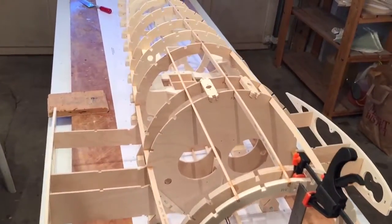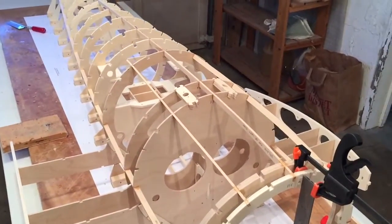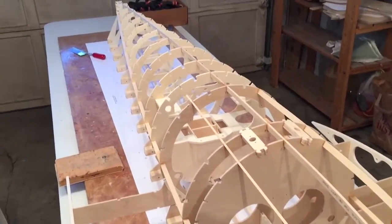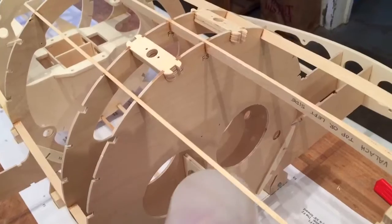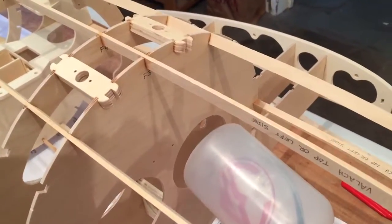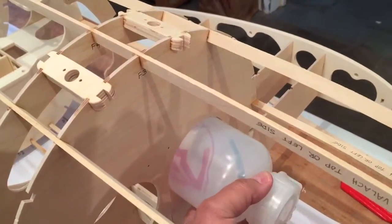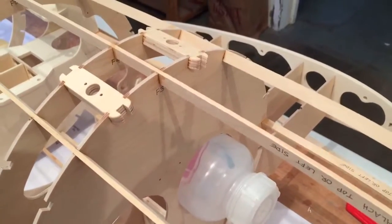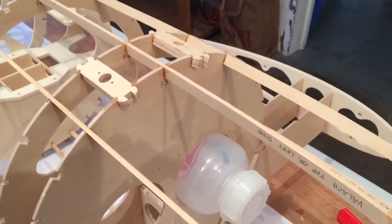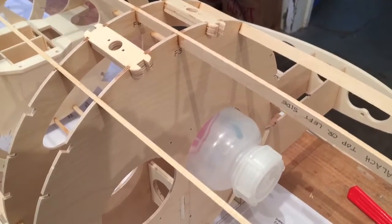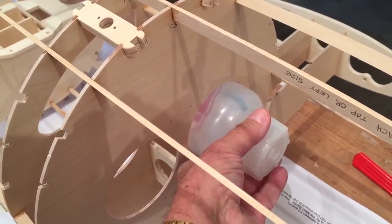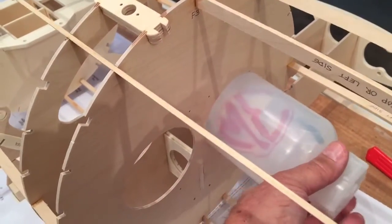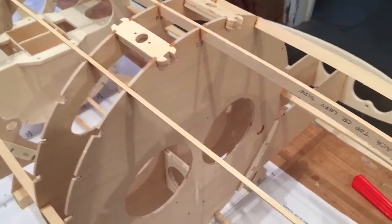This is where the fuel and smoke tanks will go. They're going to be secured with silicon glue, which works a lot better than you think it would. They're going to be just fine, and that's pretty much our story so far.